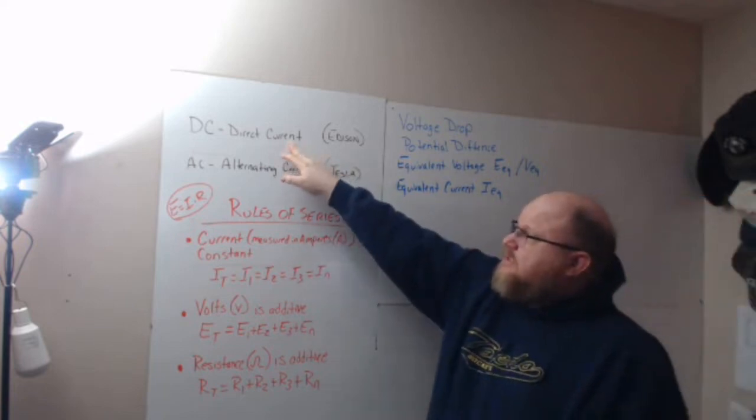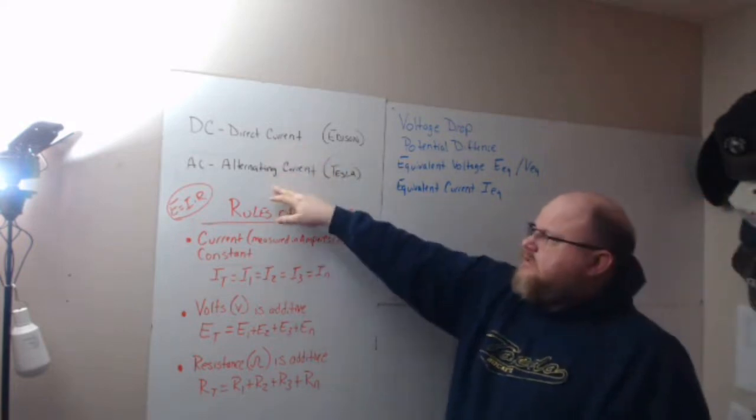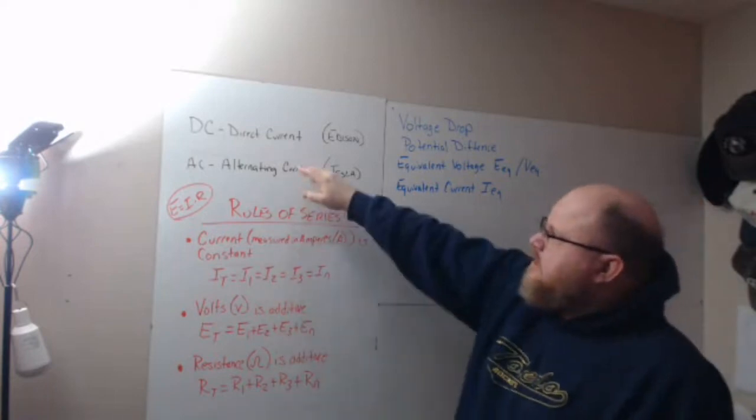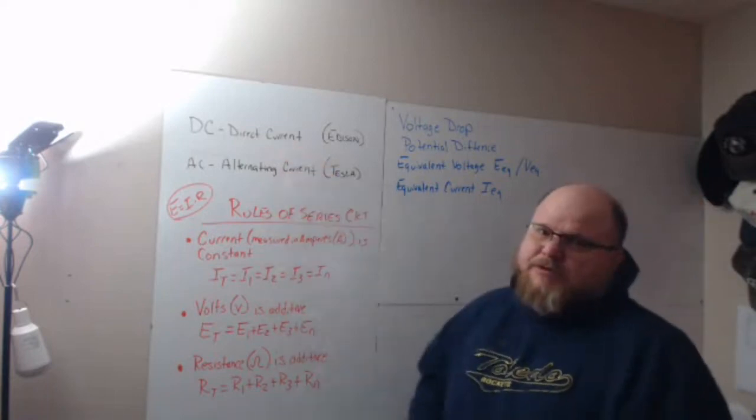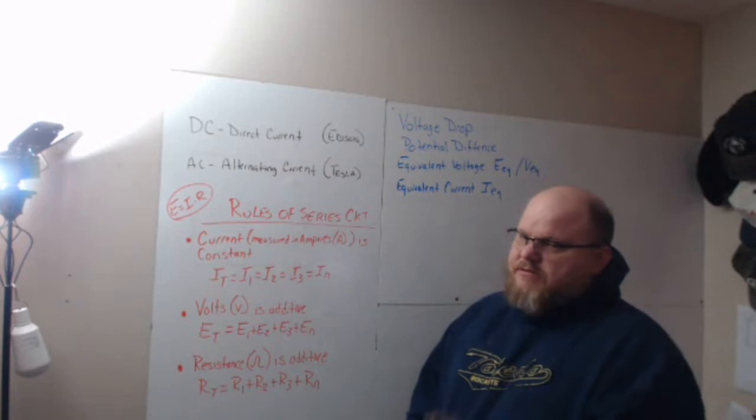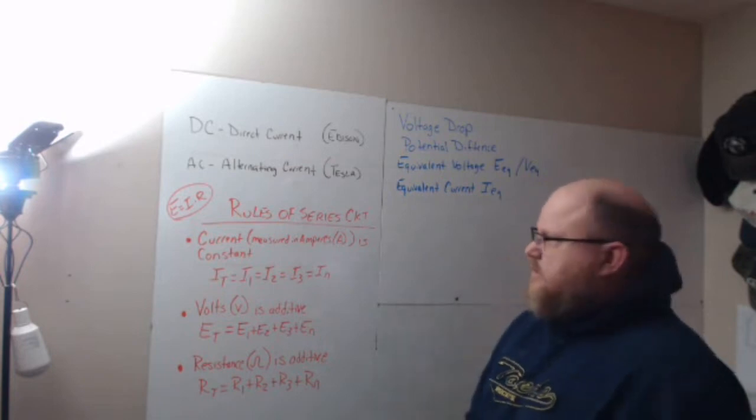First, what DC is, which is direct current, and what AC is, which is alternating current. Easiest way to think about it: DC is what the typical automobile right now uses for electrical system. Not the EVs, the ICs, the internal combustion engines.